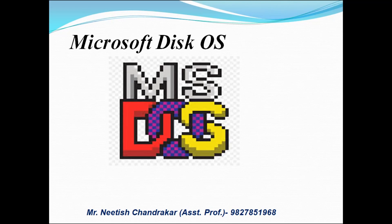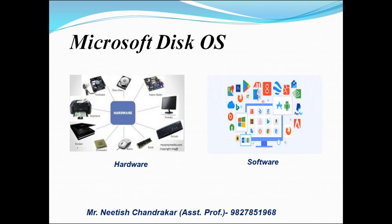यह जो Operating System है — यहाँ पर आपके Hardware हो गया। Hardware में Monitor, Keyboard, RAM, Mouse, Printer — यह सभी Hardware में आते हैं। और Software के अंतर्गत — Google Chrome, जो भी Application है, Play Store, Android App, PayPal — यह सारी चीजें Software में आती हैं।